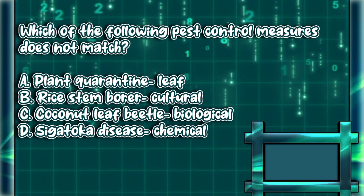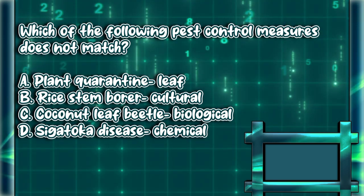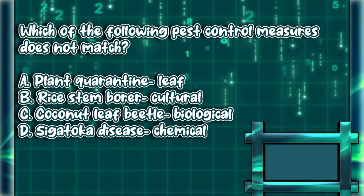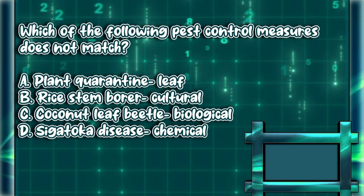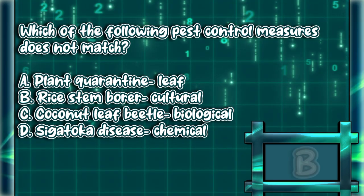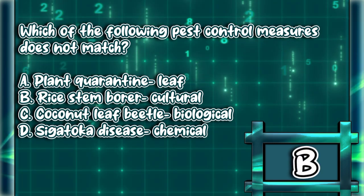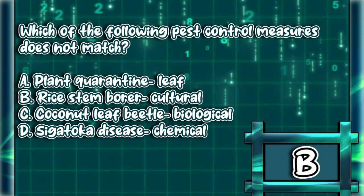Which of the following pest control measures does not match? a) plant quarantine — leaf, b) rice stem borer — cultural, c) coconut leaf beetle — biological, d) sigatoka disease — chemical. The answer is letter B.